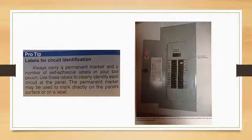Pro tip: labels for circuit identification. Always carry a permanent marker and a number of self-adhesive labels on your tool pouch. Use these labels to clearly identify each circuit at the panel. The permanent marker may be used to mark directly on the panel's surface or on a label.